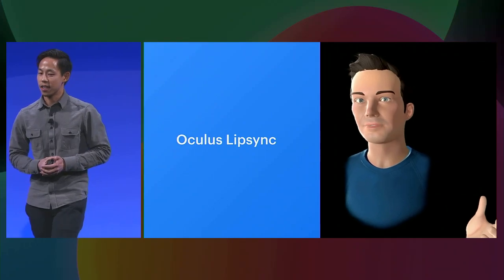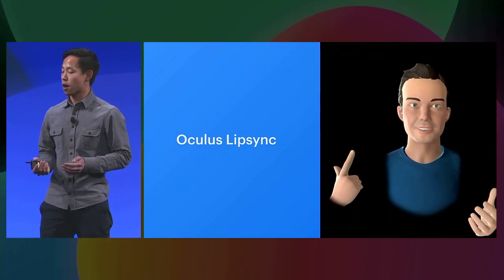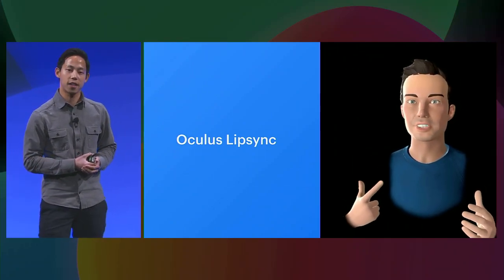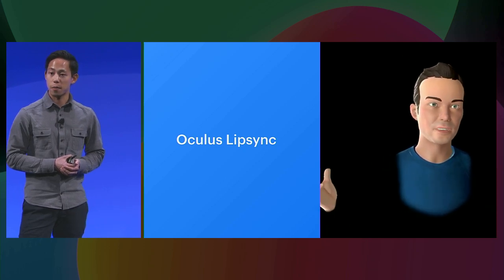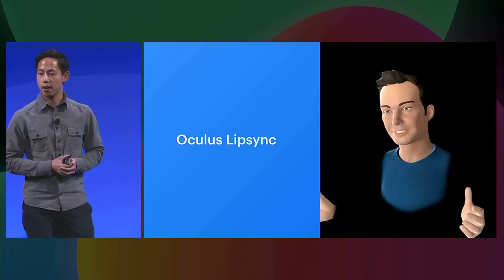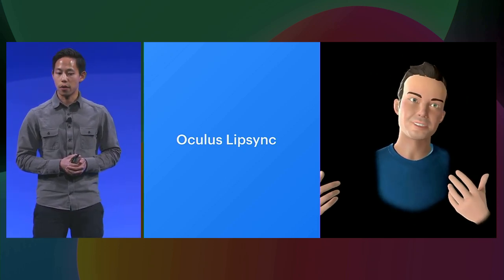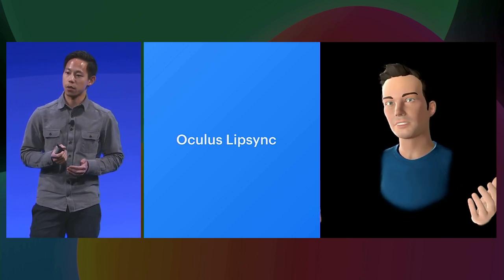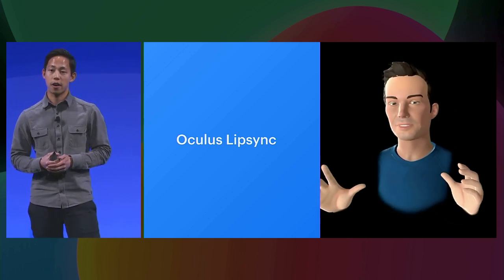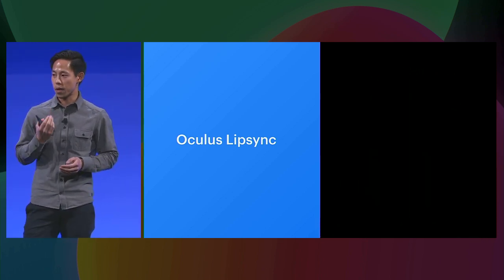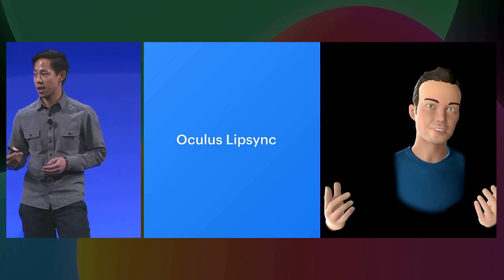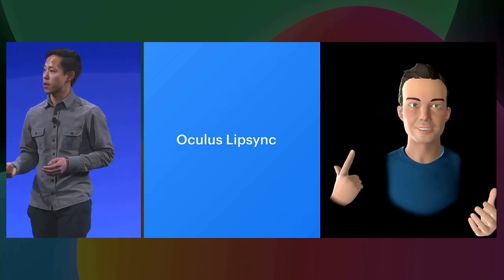For completely new experiences like augmented reality or virtual reality, we also use machine learning. An example is Oculus Lip Sync, where your avatar in a virtual environment can sync lip movements to what you're saying in real time, making interactions feel that much more natural.